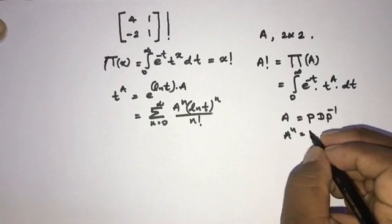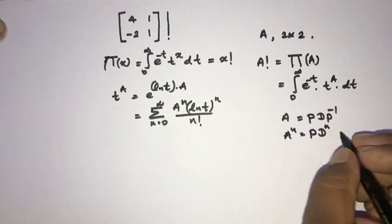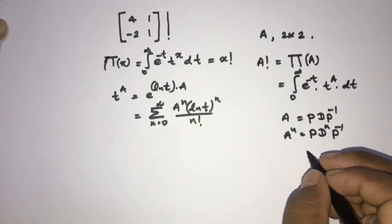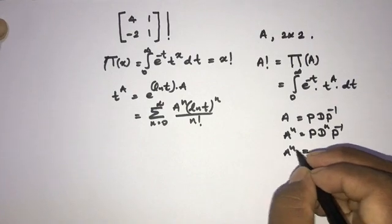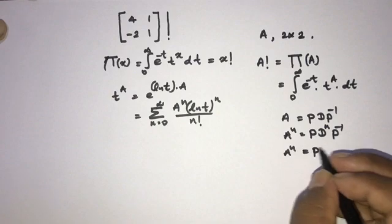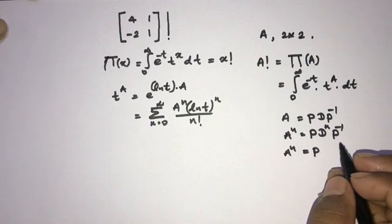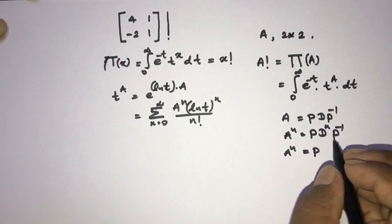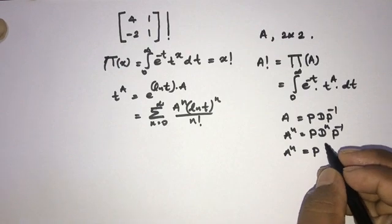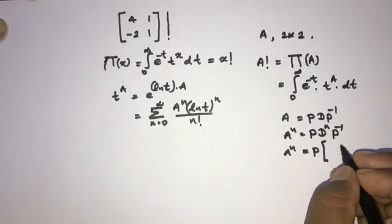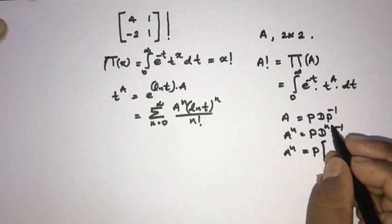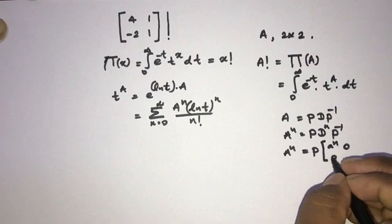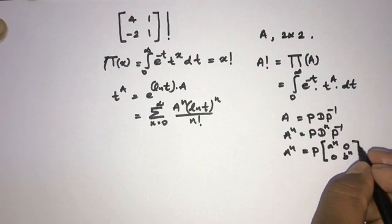For our 2×2 diagonalizable matrix, D is the diagonal matrix with entries a and b, so D equals [[a, 0], [0, b]]. Therefore D^n equals [[a^n, 0], [0, b^n]].